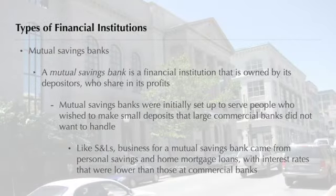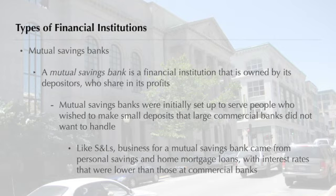In the early 1800s, institutions called mutual savings banks were set up to serve people who wished to make small deposits that large commercial banks did not want to handle. Like an S&L, business for a mutual savings bank traditionally came from personal savings and home mortgage loans. Interest rates for loans at mutual savings banks often were slightly lower than those at commercial banks.